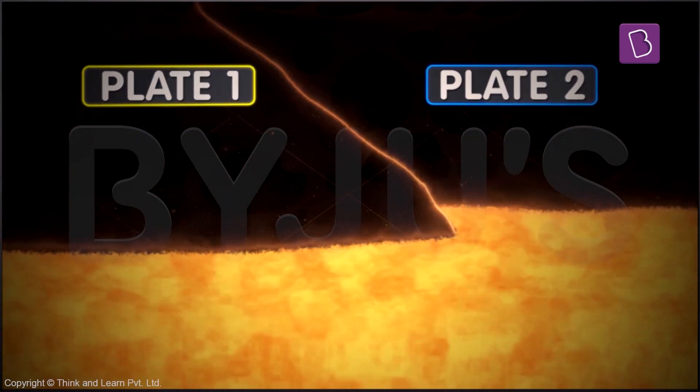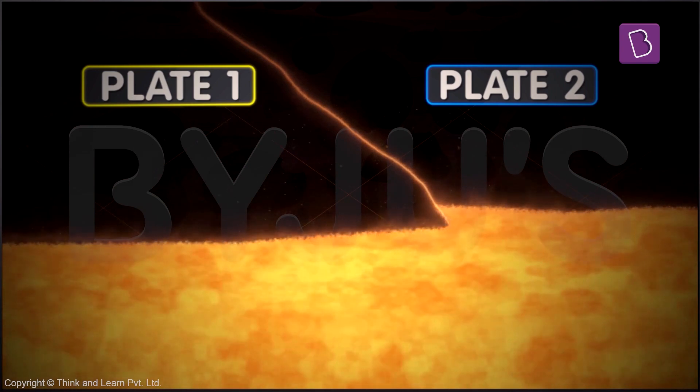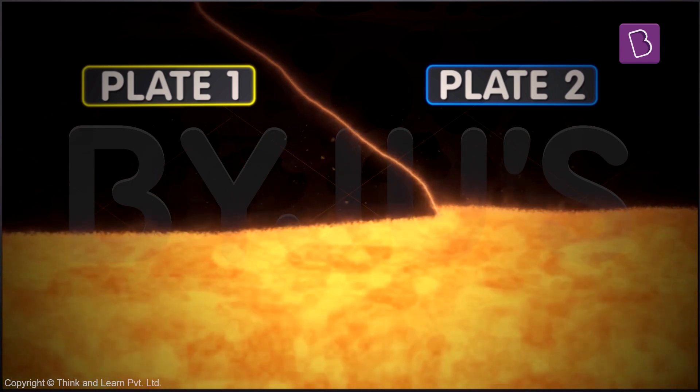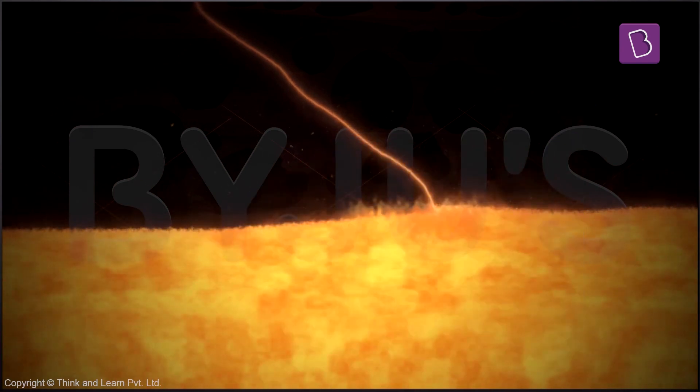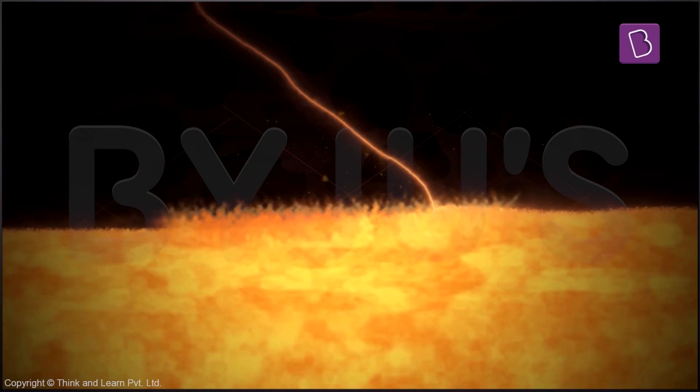So when plate 1 comes in contact with the heat of the mantle, it starts melting and becomes molten magma. This creates pressure inside the earth.